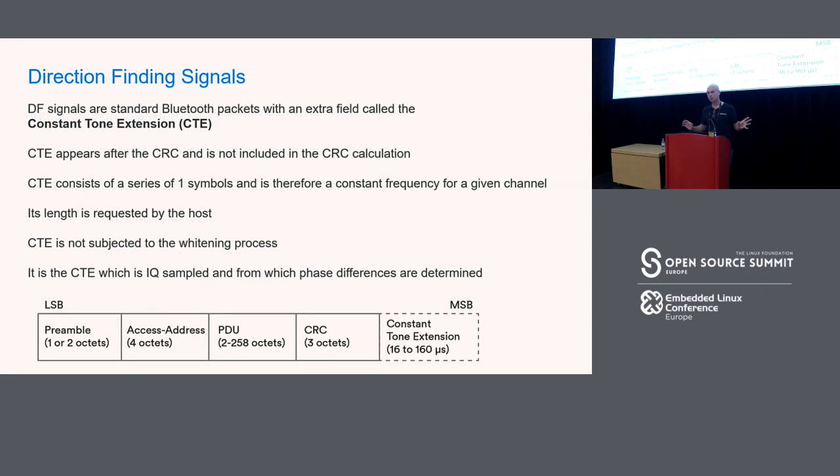That special thing is called the CTE, the constant tone extension. If it was audible, it would be a constant tone. Direction finding signals have a CTE appended to them. This is all defined in the Bluetooth 5.1 specification. Just gets tacked on the end after the CRC. We don't apply whitening to the CTE because that would mess it up.